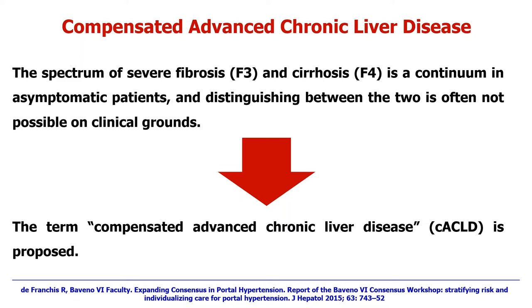The Baveno conference has proposed a new term in case of severe fibrosis, the F3 stage, and liver cirrhosis, the F4 stage, because the spectrum is a continuum in asymptomatic patients, so it is not possible to distinguish between the two on clinical grounds. For that reason, the term compensated advanced chronic liver disease has been proposed.